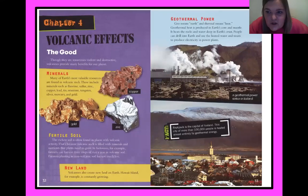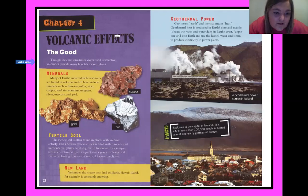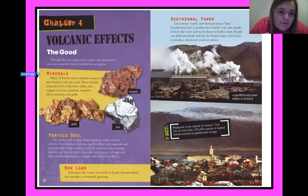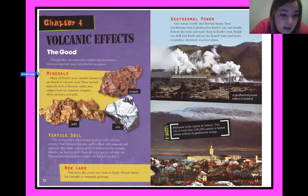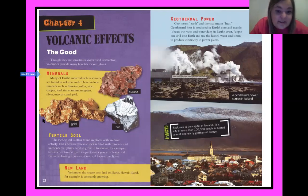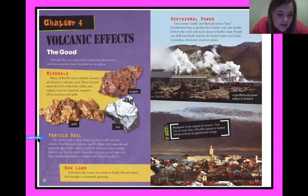Volcanic Effects — the good: 'Though they are sometimes violent and destructive, volcanoes provide many benefits for our planet.' Minerals: many of Earth's most valuable resources are found in volcanic rock. These include minerals such as fluorine, sulfur, zinc, copper, lead, tin, uranium, silver, mercury, and gold.